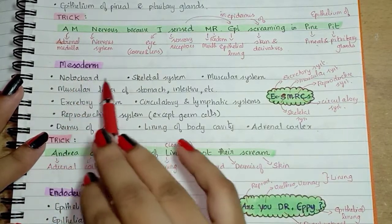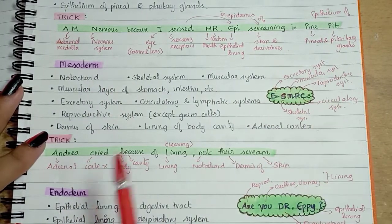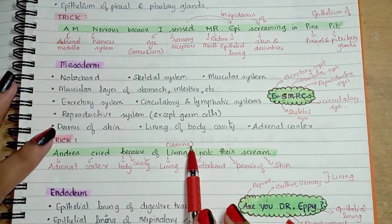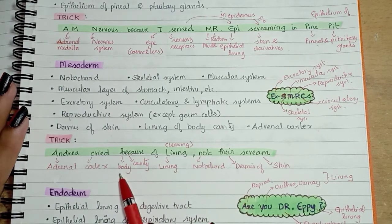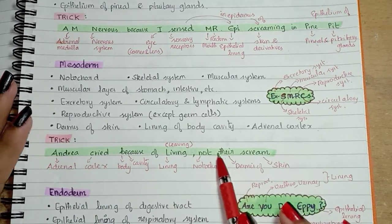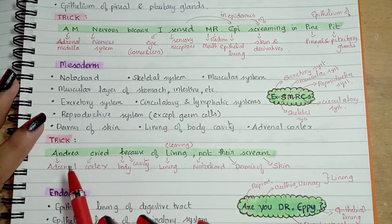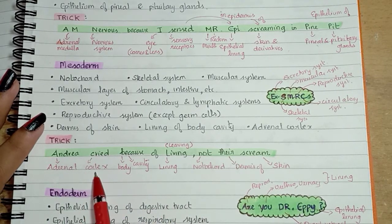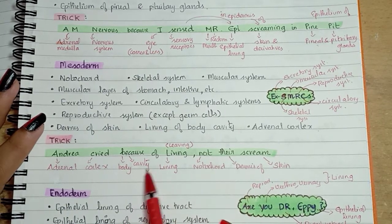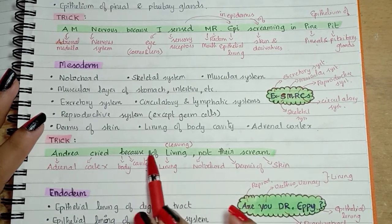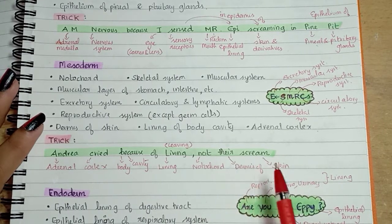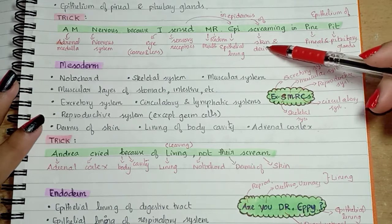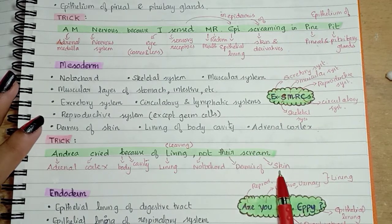The trick for mesoderm structures is: "Andrea cried because of leaving, not their scream." Here 'leaving' means L-E-A-V-I-N-G, not L-I-V-I-N-G. Andrea's close mate is leaving the house, so she is crying, and others thought she was crying because of a scream. So: 'Andrea' and 'cried' = adrenal cortex (AC); 'because' = body cavity lining; 'leaving' = lining of body cavity; 'not' = notochord; 'their scream' = dermis of skin. Note that in ectoderm it was epidermis of skin, while here in mesoderm it is dermis of skin.